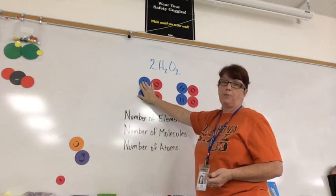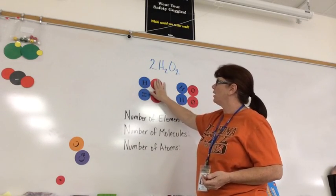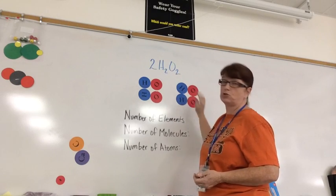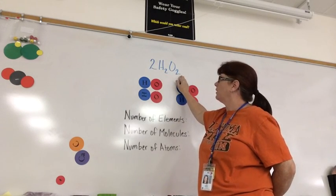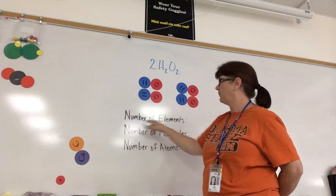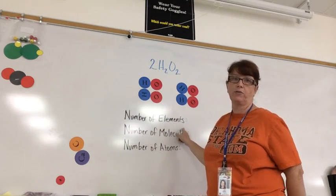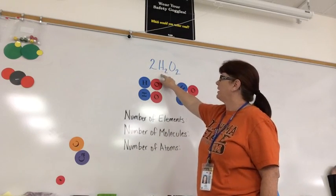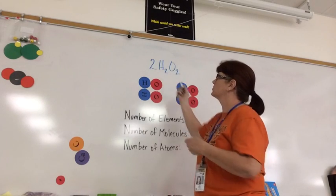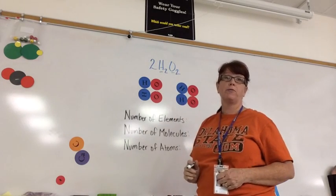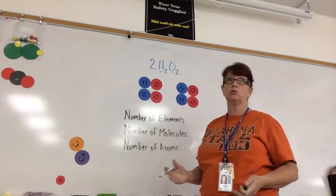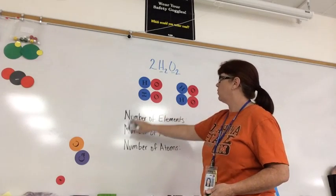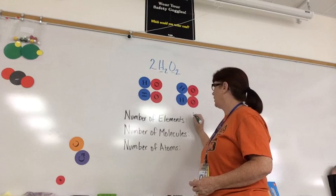I'm going to represent it by these circles. I've got 2 and 2 and 2 and 2. When I look at this formula, the first thing I need to do is figure out the number of elements. If I count the capital letters, the H and the O are both capital, and because they're both capital, I count those as 2 separate elements. So I have 2 elements.